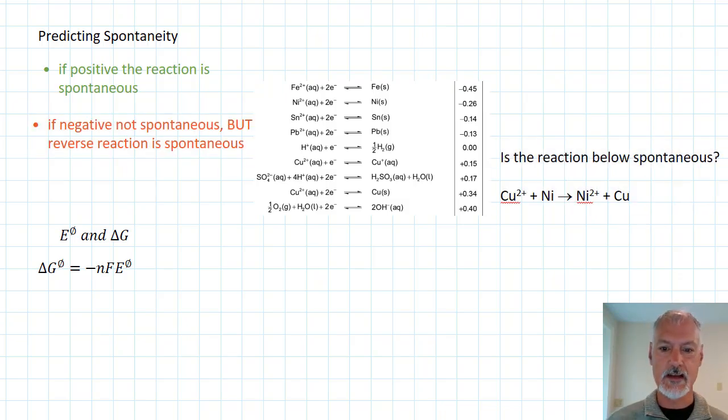So is this reaction spontaneous? So the first thing I'm going to do is take this reaction and divide it into two half reactions. The copper ions turning into copper plus, and the second reaction, the nickel turning into the nickel ions.